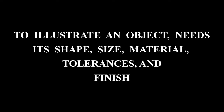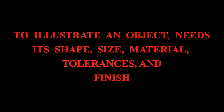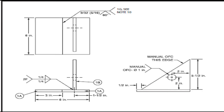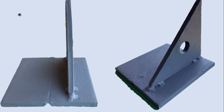To document an object or a part requires its shape, sizes, material, tolerances, and finish. These details should be available in the drawings. If you are looking at a drawing, you should get all these important dimensions and information which are required to fabricate the object or a part.